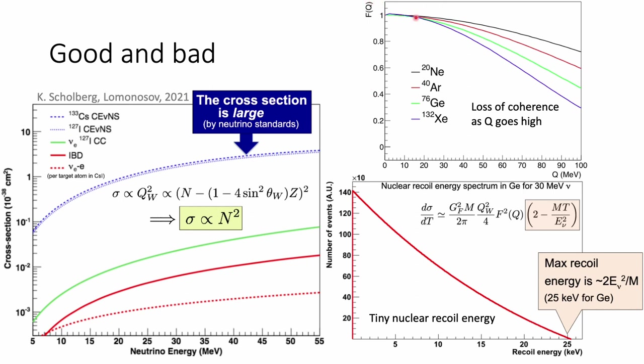Now let's talk about the bad side. If you use a tiny bar to hit a huge bar, the kinetic energy that the huge bar can obtain is just tiny. Take germanium nucleus as an example — the highest energy it can gain from a 30 MeV neutrino is just about 25 keV. To make things worse, most of this energy is released as heat and not detectable. All these effects make it very hard to detect CEvNS experimentally.